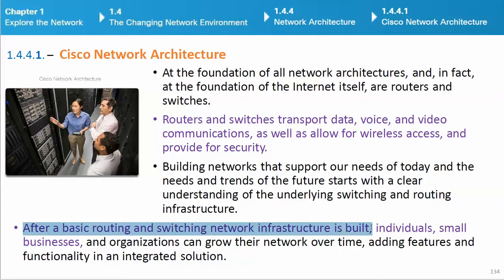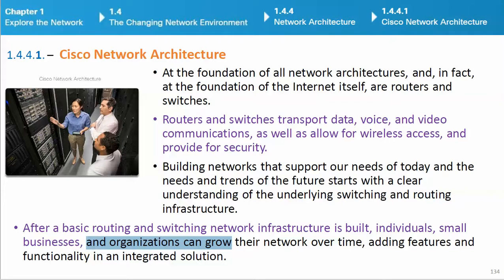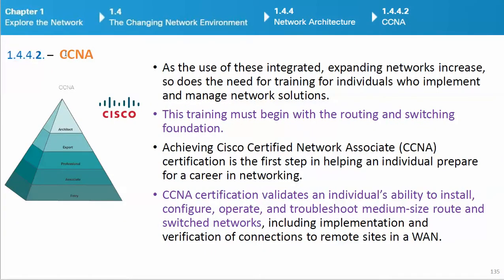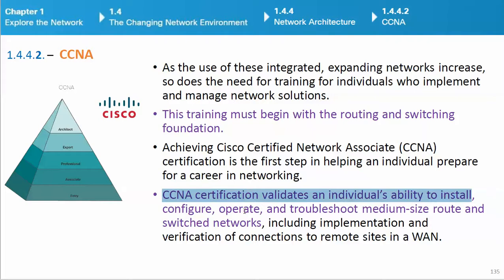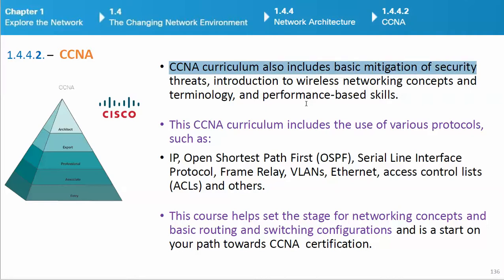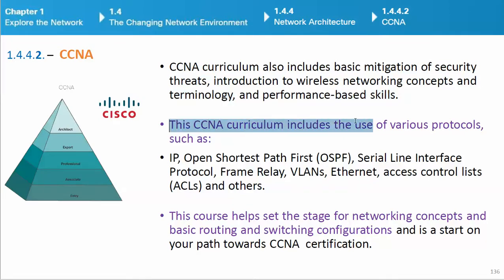After a basic routing and switching network infrastructure is built, individuals, small businesses, and organizations can grow their network over time, adding features and functionality in an integrated solution. As the use of these integrated, expanding networks increases, so does the need for training for individuals who implement and manage network solutions. CCNA certification is the first step in helping an individual prepare for a career in networking. CCNA certification validates an individual's ability to install, configure, operate, and troubleshoot medium-sized routed and switched networks, including implementation and verification of connections to remote sites. CCNA curriculum also includes basic mitigation of security threats, introduction to wireless networking concepts and terminology, and performance-based skills.